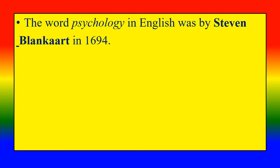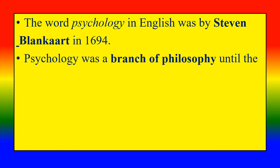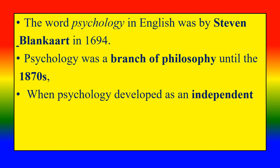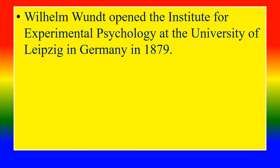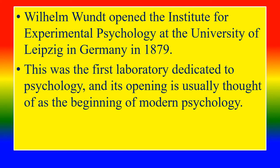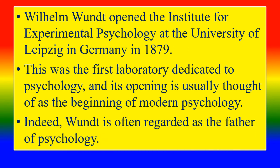Psychology was a branch of philosophy until the 1870s, when it developed as an important scientific discipline in Germany and the United States. Wilhelm Wundt opened the Institute for Experimental Psychology at the University of Leipzig in Germany in 1879. This was the first laboratory dedicated to psychology, and its opening is usually thought of as the beginning of modern psychology. Indeed, Wundt is often regarded as the father of psychology.